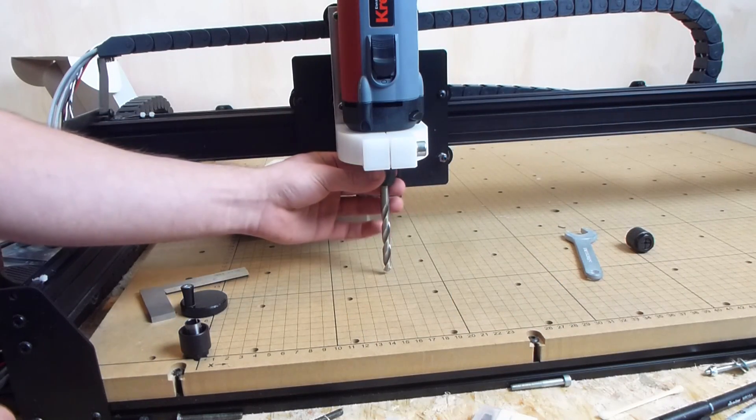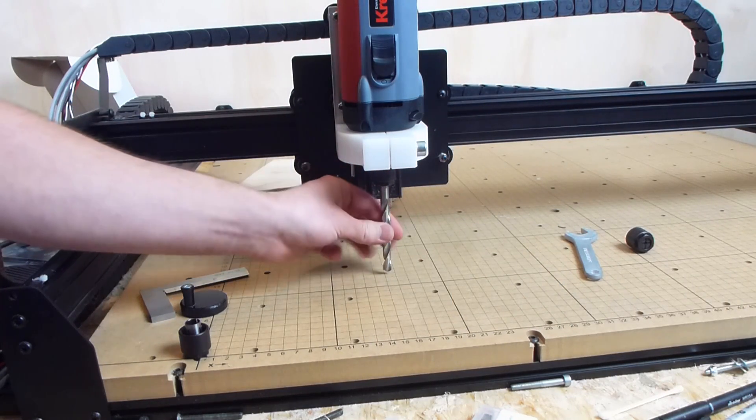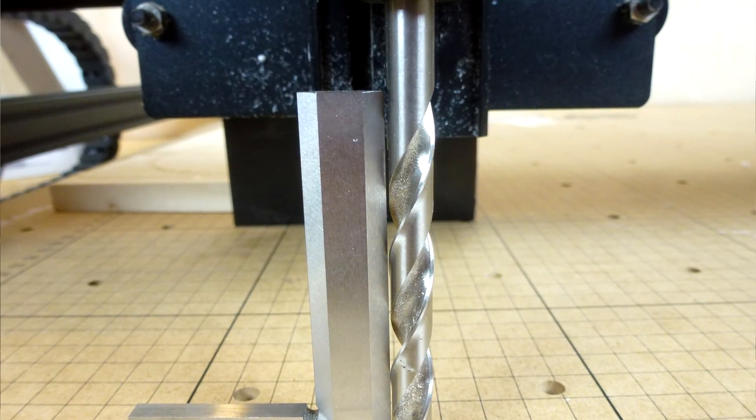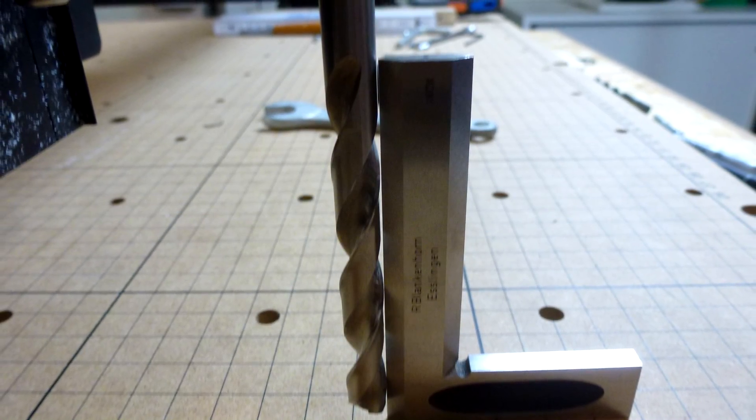To align the new spindle and make sure it's square I installed a drill bit into the chuck. With it I can now look if everything is square.